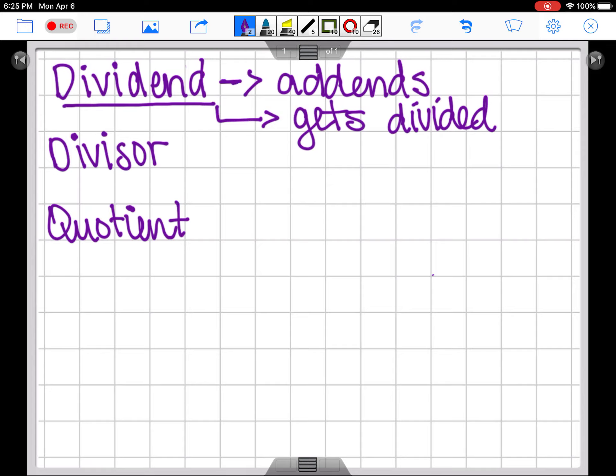The next one we have here is the divisor. The divisor is the one that's going to be doing the dividing. This suffix here, -or, indicates or means that this is the thing that's going to do the action.